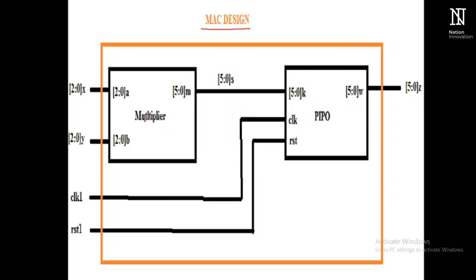The components we will be using are a multiplier and PIPO. PIPO is parallel in, parallel out. Looking at the internal variables of the multiplier: A and B are the inputs, which are of 3-bit size. M will be the output, which will be 6 bits in size.